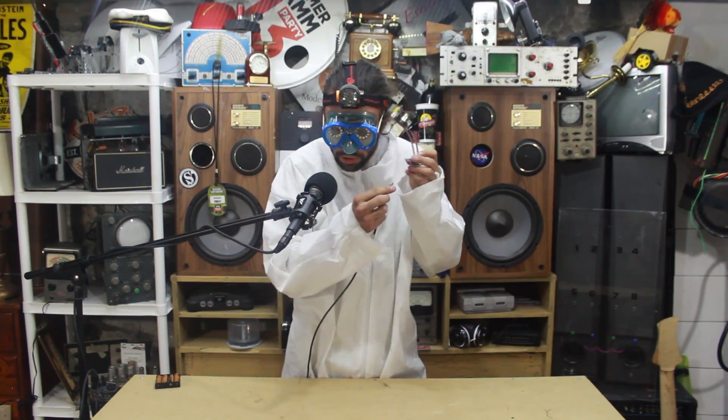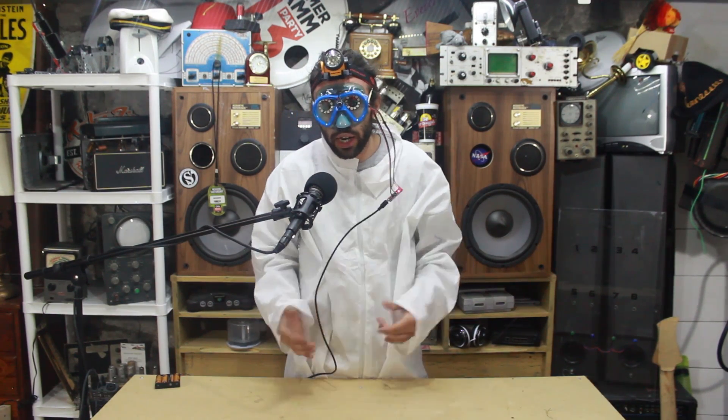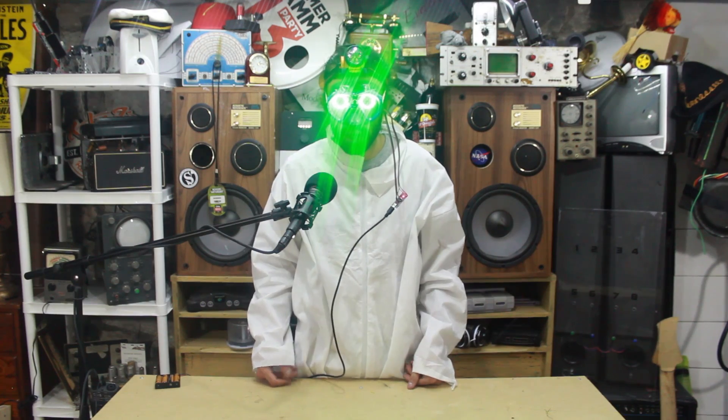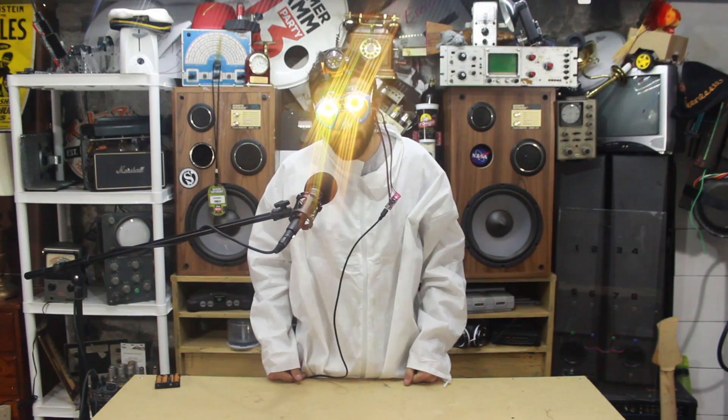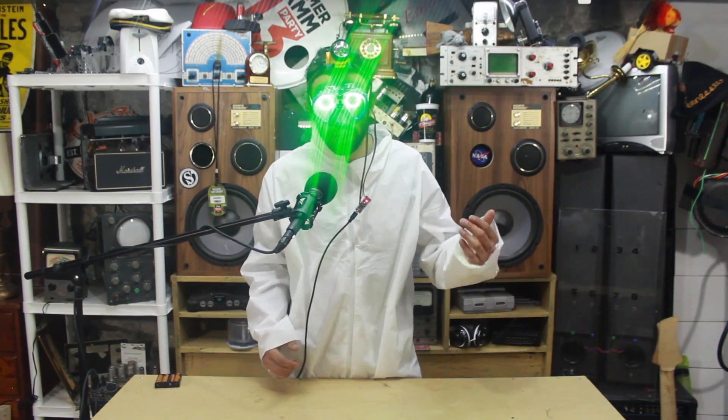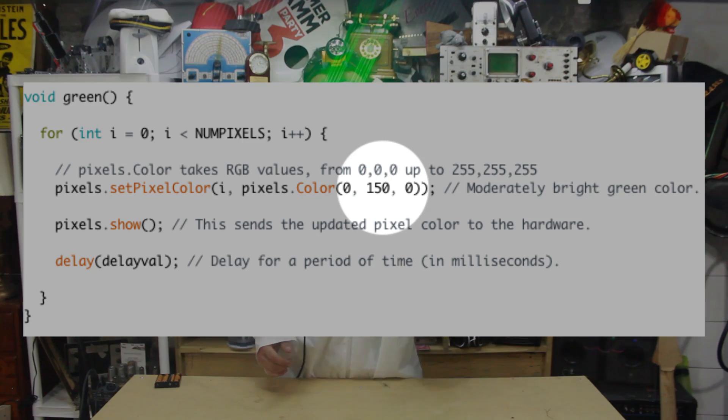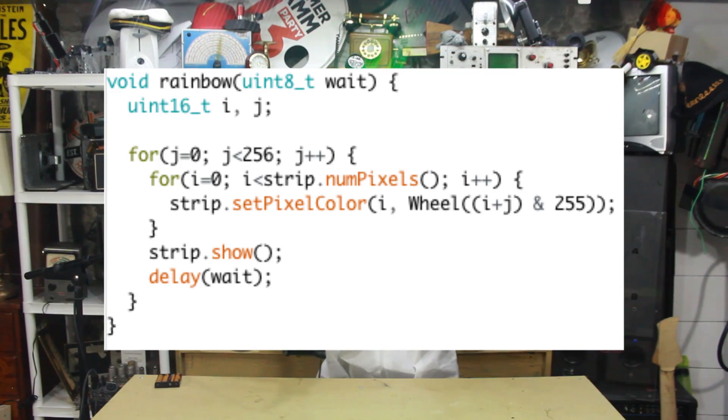NeoPixels are actually a little complicated to use, so Lady Ada provides a great Arduino library and example projects to get things up and running, which I utilized in this situation. The solid colors can be adjusted by setting these values in the code, and they can be animated with commands like this one here.